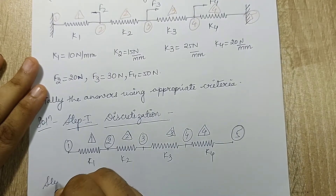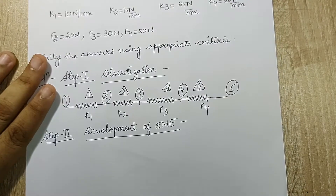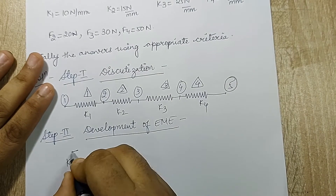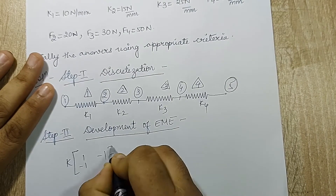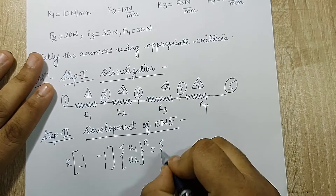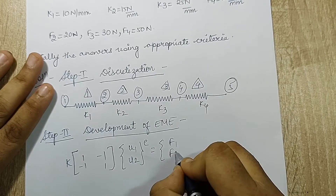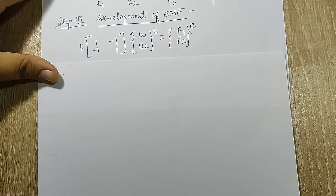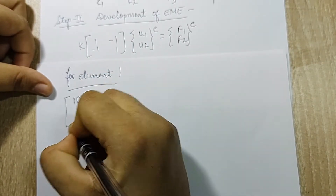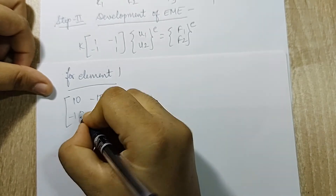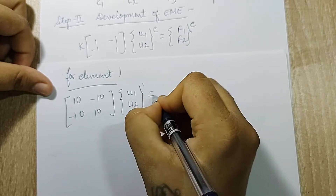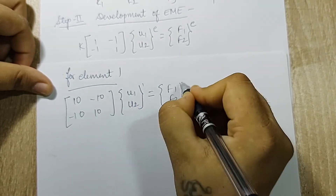Step two is development of the element stiffness matrix (EME). Using F = KU, I write the stiffness matrix with displacements U1, U2 and forces F1, F2. For element one, the value of K is 10, so the matrix is [10, -10; -10, 10] times [U1, U2]^T equals [F1, F2]^1.